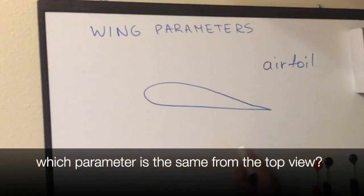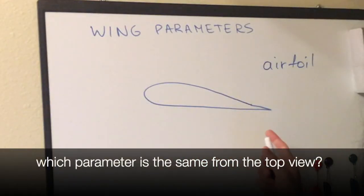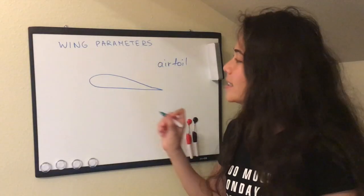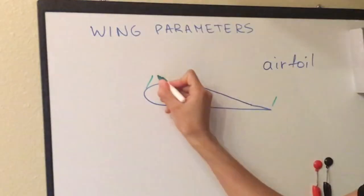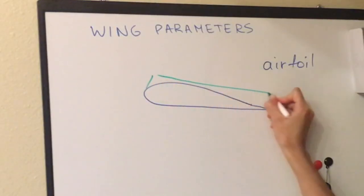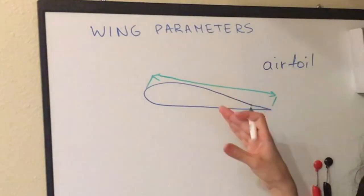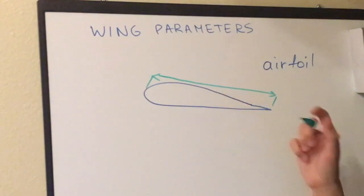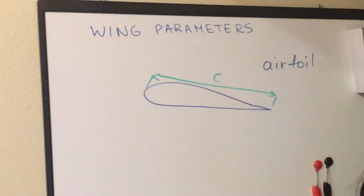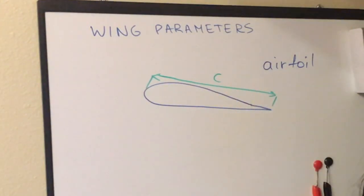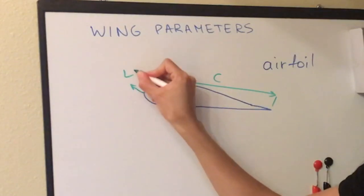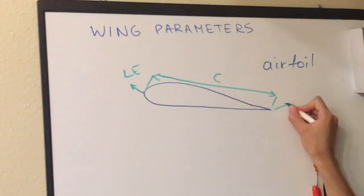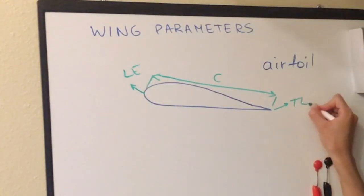For now we are learning just the parameters of the airfoil. Which parameter here is the same as from the top view? You probably guessed that it's the length of the airfoil, which is the width of the wing from the top view — and it's called the chord. Here is the leading edge and the trailing edge.